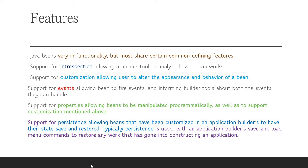Support for properties allows beans to be manipulated programmatically as well as to support customization. Support for persistence allows beans that have been customized in an application builder to have their state saved and restored. Typically, persistence is used with an application builder's save and load menu commands to restore any work that has gone into constructing an application.